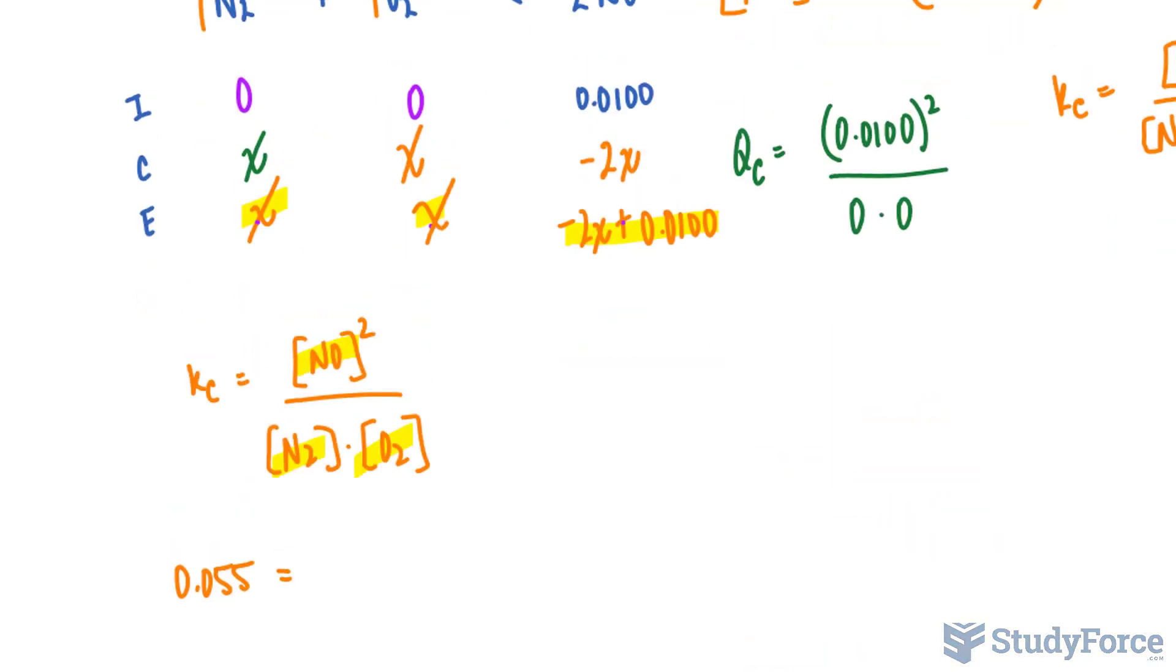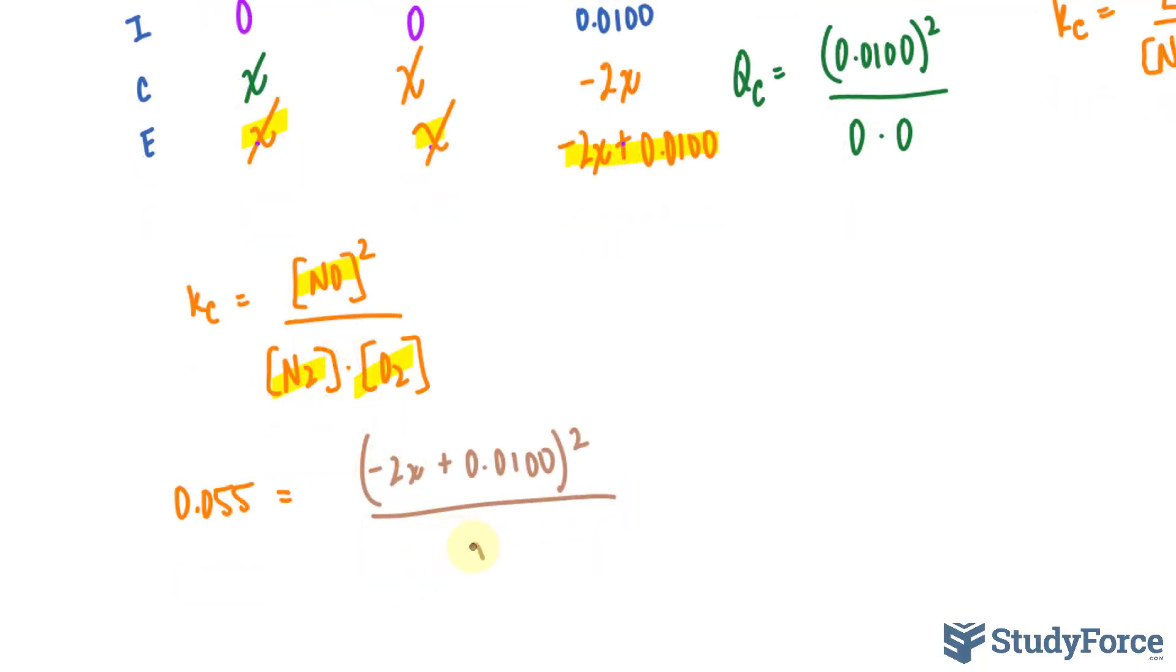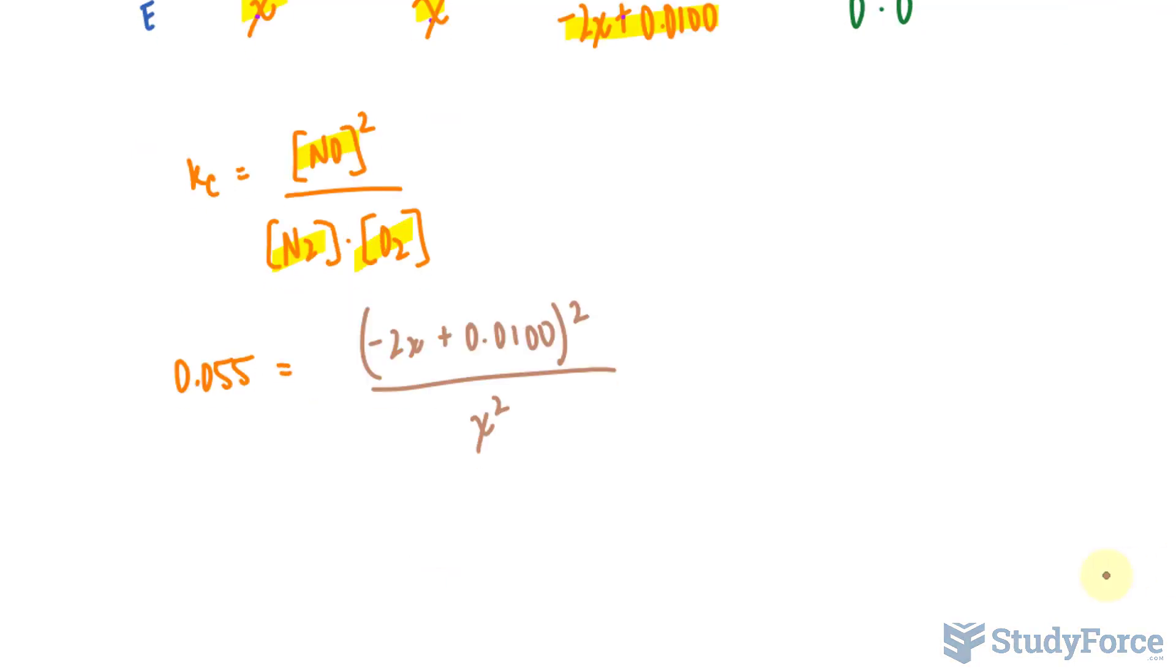Beginning with NO, we have the expression negative 2X plus 0.0100. And that is all being raised to the power of 2 over X times X, which is X squared. The next step in the solving process is to multiply both sides of this equation by X squared. And that will cancel out the X squared at the bottom. And by all means, just like how I did in question 1 of this series, you could solve this in a different way. You can actually square root both sides of this equation and take that route.